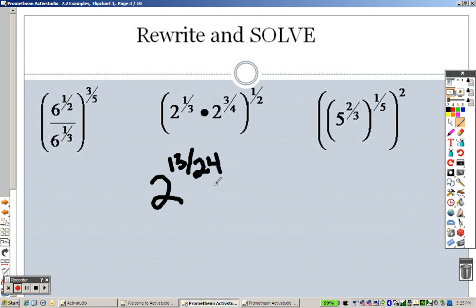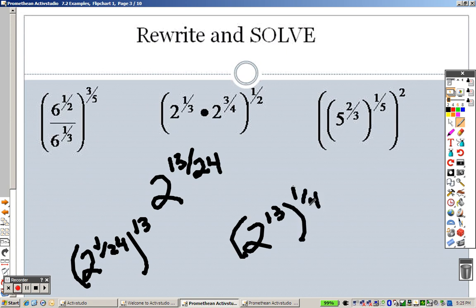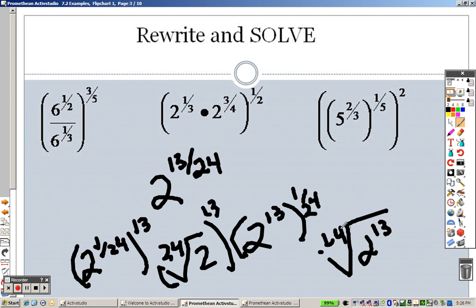So the question is, how do you rewrite that? Well, there's a couple ways. I could rewrite that as 2 to the 1 24th, and all of that to the 13th power. Or I could write that as 2 to the 13th power, all to the 1 24th. So either or. And when you have a fraction, it's like saying the 24th root of 2 times 13, or this one's like saying the 24th root of 2 to the 13th. Either one will work.